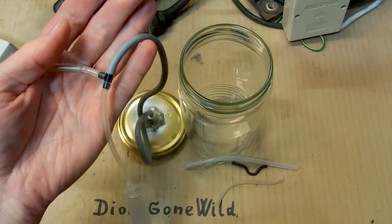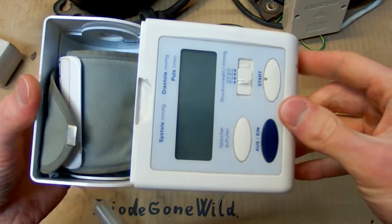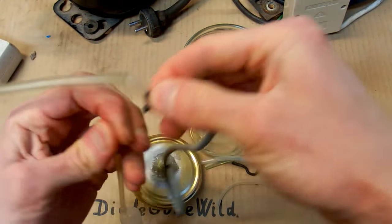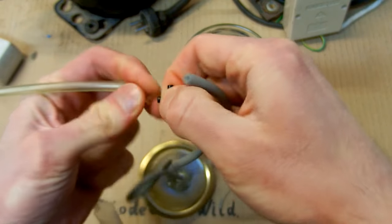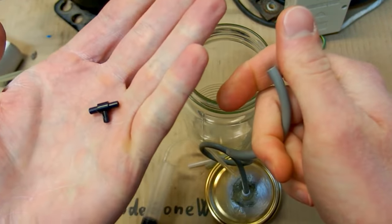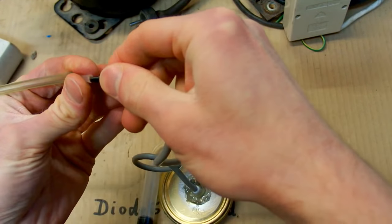And this splitter comes from a blood pressure meter like this. Now this tiny piece of plastic is quite useful. It's a splitter for hoses. So let's put it back together.